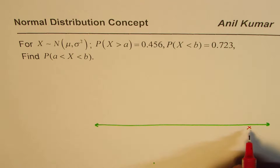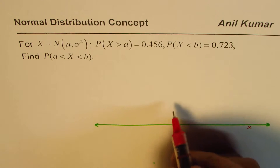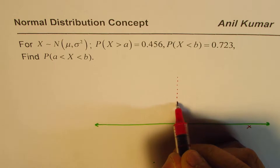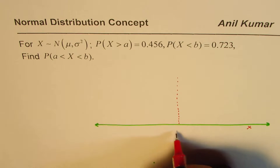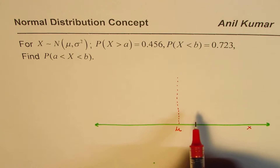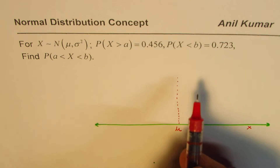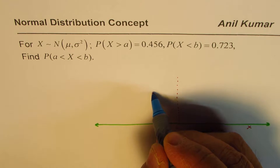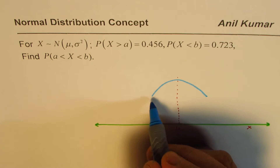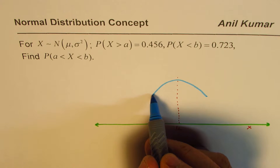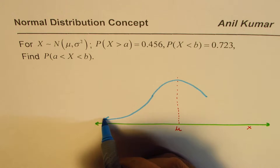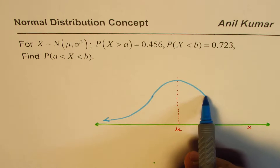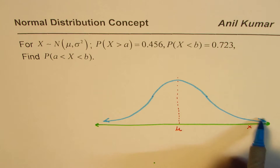Somewhere in between we'll have mu. Since mu is not given, I'm not writing a number here — we're keeping it general. The standard deviation is where the change in concavity occurs. I'll sketch a graph for the normal distribution: it will be concave down up to mu, then the concavity changes, and it continues asymptotically toward the horizontal line on both sides.